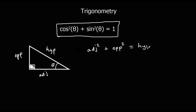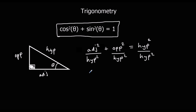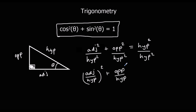From Pythagoras we know that adjacent squared plus opposite squared equals hypotenuse squared. Now if we take this and divide everything through by the hypotenuse squared — dividing each term — we get adjacent over hypotenuse squared, plus opposite over hypotenuse squared, equals hypotenuse over hypotenuse squared.